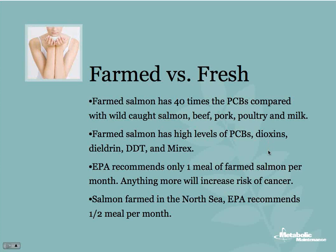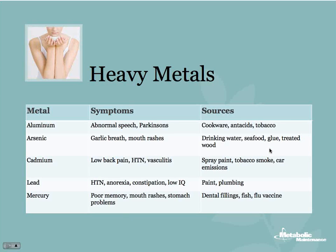Heavy metals — here's a list of symptoms and sources. We've got aluminum, which can cause abnormal speech and potentially Parkinson's; arsenic, which I see a lot of in Connecticut, likely from the water; cadmium; lead; and of course mercury. I think dental fillings are some of the worst sources of mercury because it's the mercury vapor that evaporates off the filling. That mercury vapor is actually more toxic than the methylmercury in tuna, as described in a 2005 study in the German journal Gesundheitwesen.